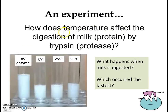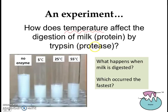Let's start by talking about how temperature affects enzyme activity. Here we have a simple experiment involving the digestion of milk by an enzyme called trypsin, which is a protease. Trypsin acts on the protein found in milk. We have four test tubes, each containing some milk.